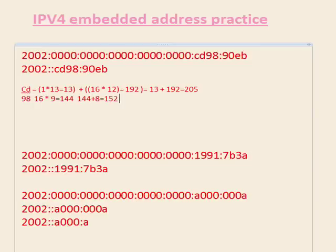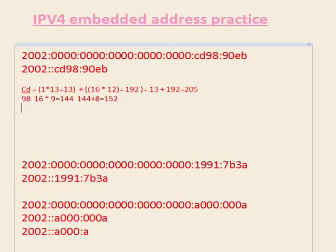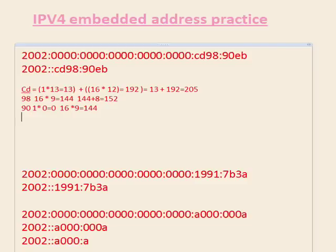That equals one hundred fifty-two. The next one is nine-zero: one times zero is zero, and nine times sixteen equals one hundred forty-four. So nine-zero converts to one hundred forty-four.